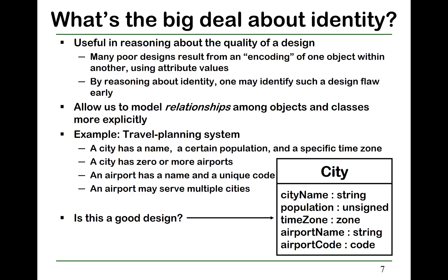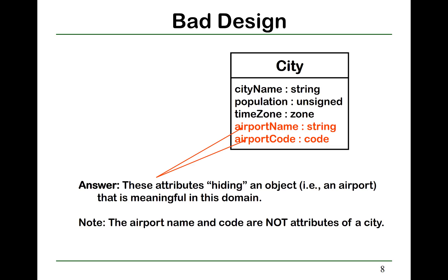For example, suppose you are asked to design a travel planning system where a city has a name, a population, and a time zone, and a city may have zero or more airports, and an airport has a name and an airport code. If you design a city class with five attributes — city name, population, time zone, airport name, and airport code — that is not a good design, because airport name and code are not attributes of a city; they should form another object.